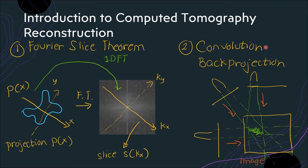Then we have the convolution back projection shown here, and this is what we usually use. It is very efficient and therefore widely used. Instead of doing an inverse Fourier transform, it applies an operation called the convolution, which is used to filter or remove the blurring before smearing back the projection across the image at the angle it was acquired. So we have this projection data from various angles, then we smear them out to reconstruct our image.